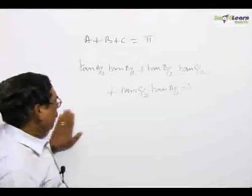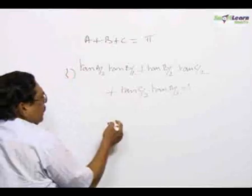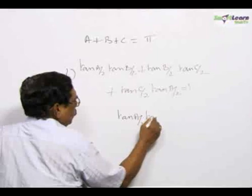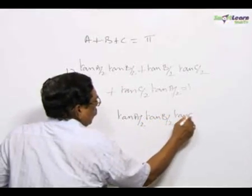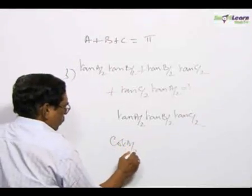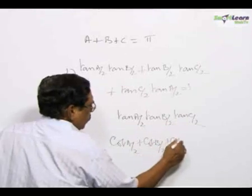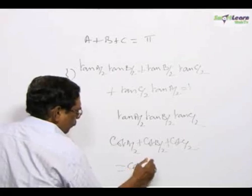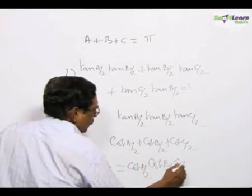Now, in the same manner, if I multiply the numerator and the denominator by tan A by 2, tan B by 2 into tan C by 2, then I will have cot A by 2 plus cot B by 2 plus cot C by 2 will be equal to cot A by 2 into cot B by 2 into cot C by 2.